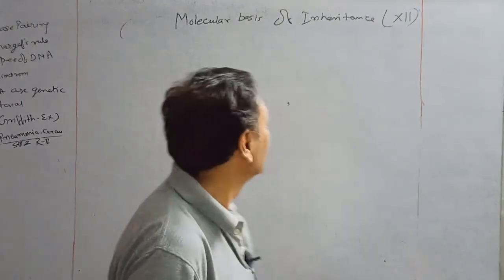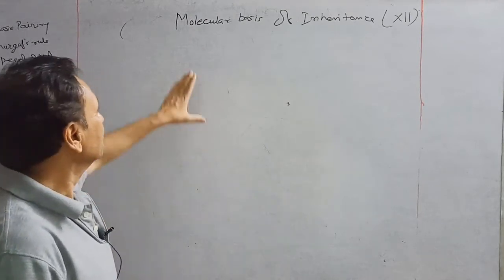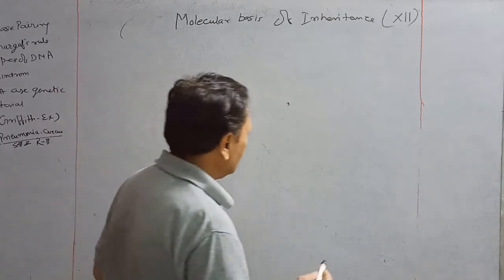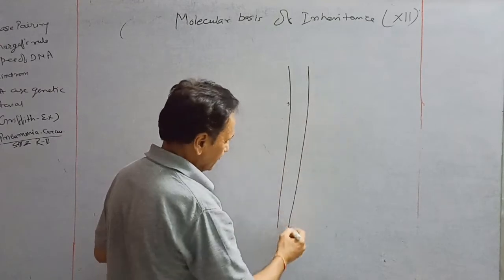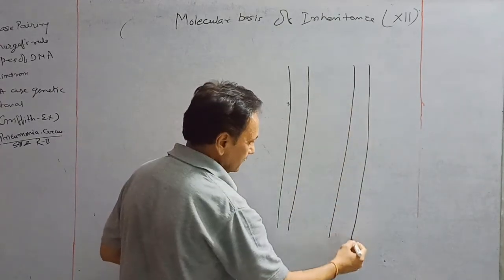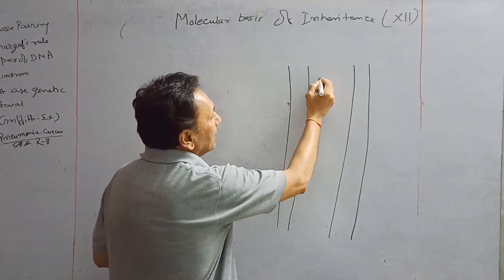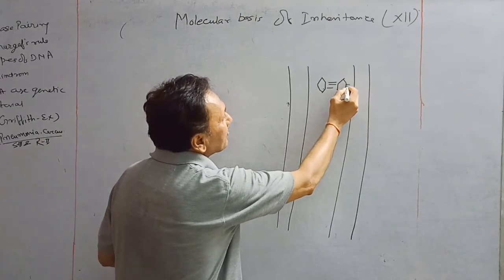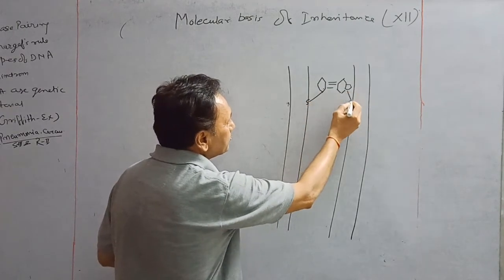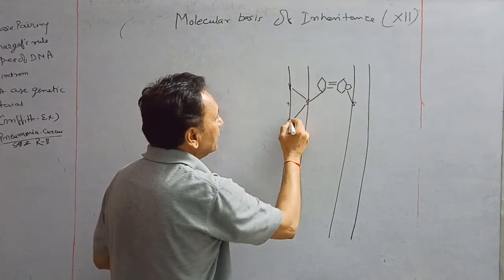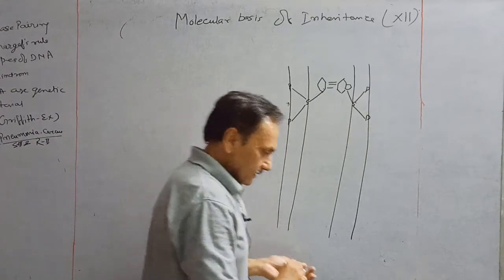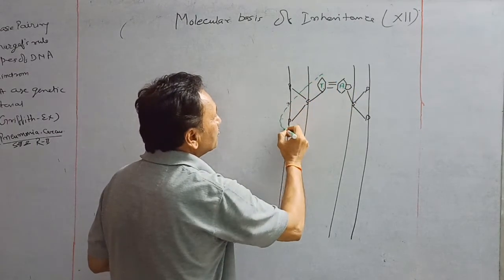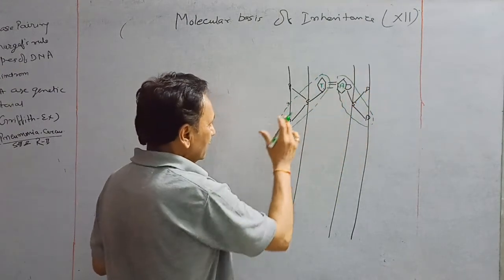Good morning students. Today we will discuss the molecular basis of inheritance. In this chapter, we have previously discussed the structure of DNA — that DNA is a double-stranded antiparallel structure where pyrimidine and purine are present in the center, connected with the sugar molecule. Both sugar molecules are connected with the phosphate molecule. By this structure, if one base is adenine, then the opposite is thymine.